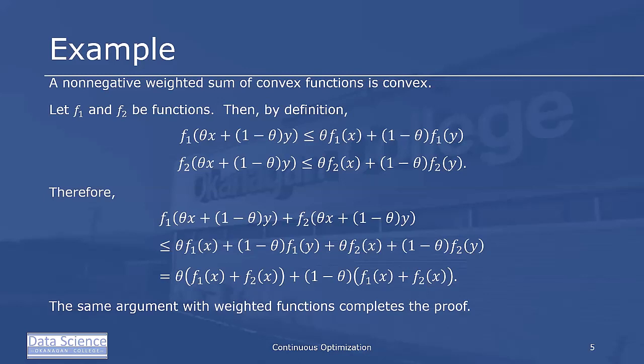Therefore, summing the previous two inequalities, we get f₁(θx + (1-θ)y) + f₂(θx + (1-θ)y) ≤ θf₁(x) + (1-θ)f₁(y) + θf₂(x) + (1-θ)f₂(y), which equals θ(f₁(x) + f₂(x)) + (1-θ)(f₁(y) + f₂(y)).